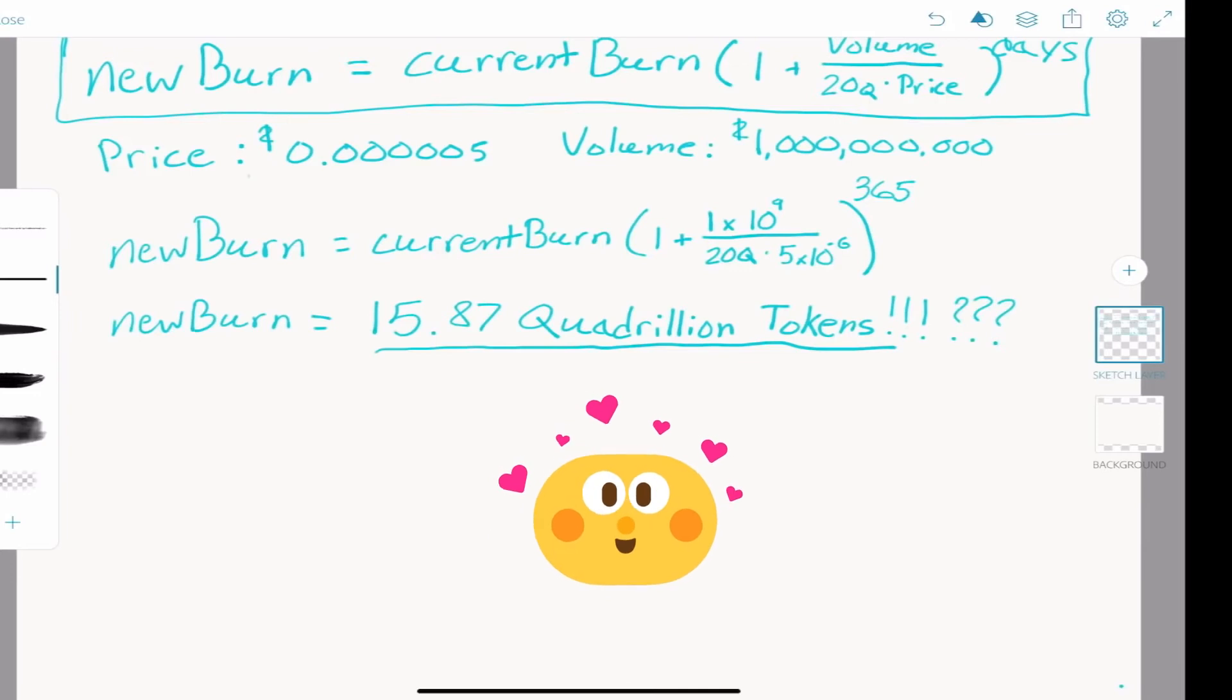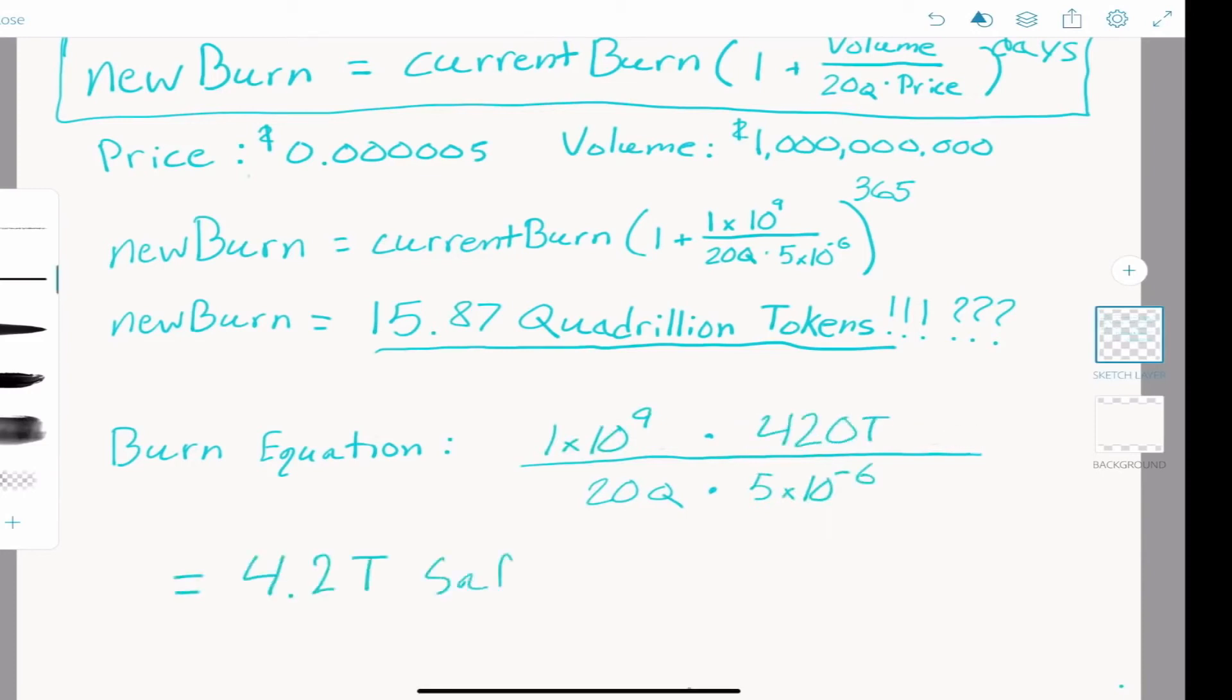Now before you close the video and say this guy doesn't know what he's talking about—there's only 580 trillion tokens left—just step back and think about this with me. Our burn equation tells us that $1 billion of volume at this price burns 4.2 trillion SafeMoon per day. When that compounds, we would burn through the entire supply of SafeMoon within 100 days.